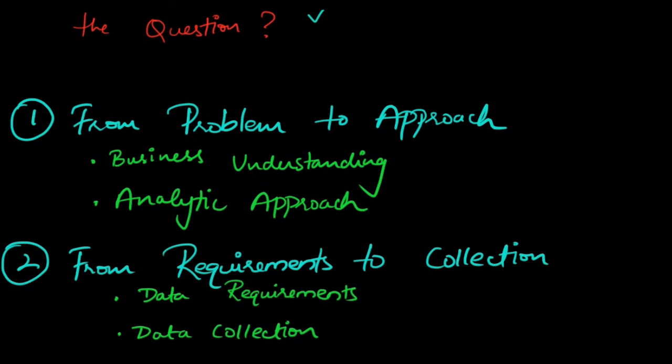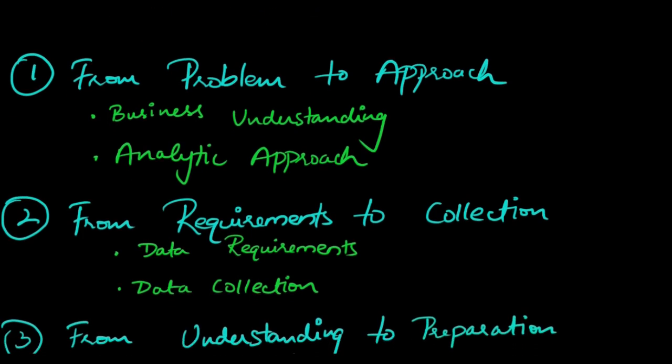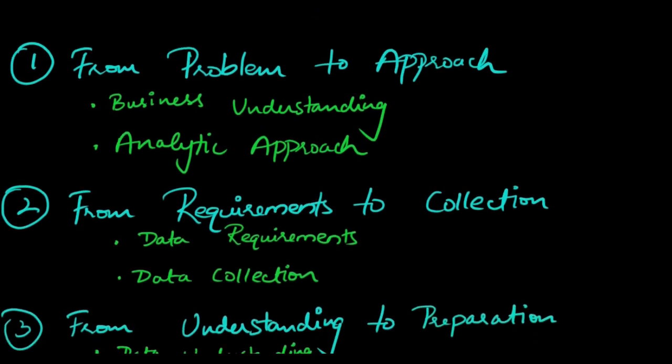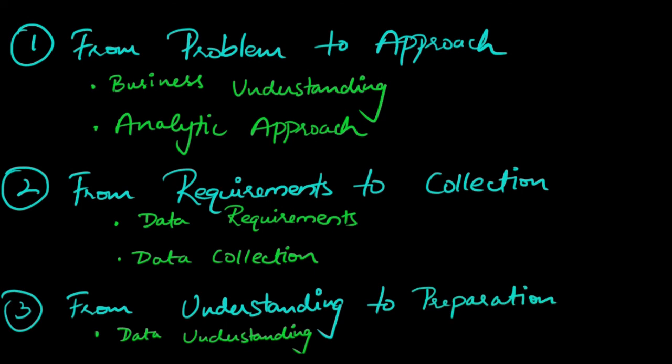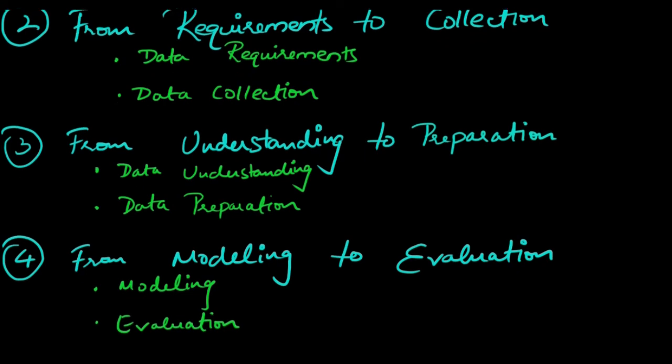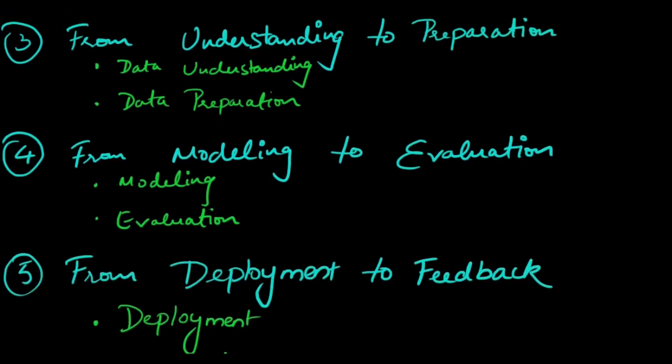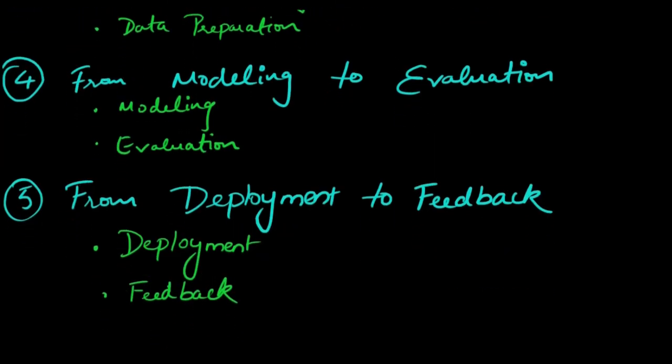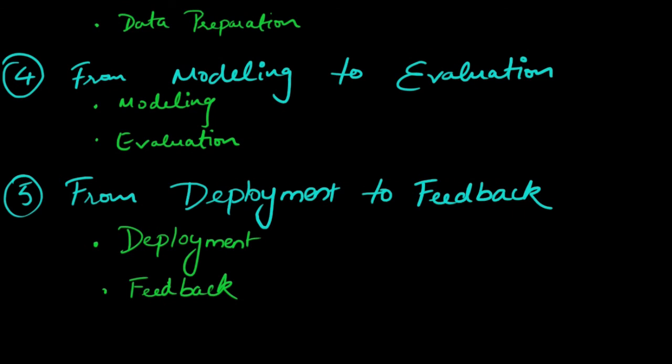I'll break these questions down to five aspects that every data scientist would cover during the course of their project. These are the following: from problem to approach, then from requirements to collection, then from understanding to preparation, then from data modeling to evaluation, and finally, data deployment to feedback.